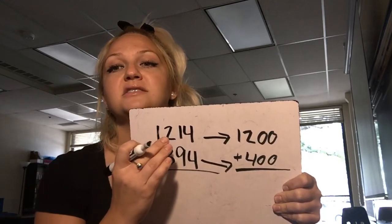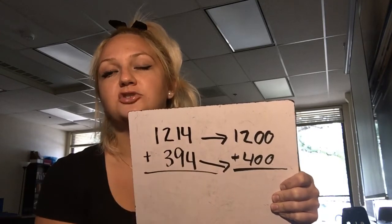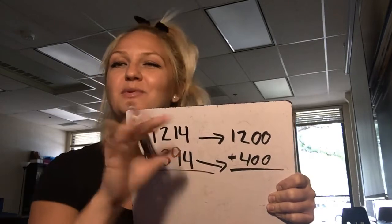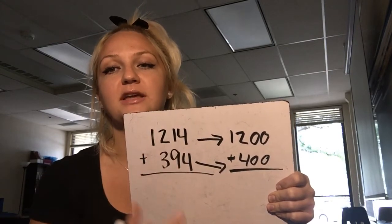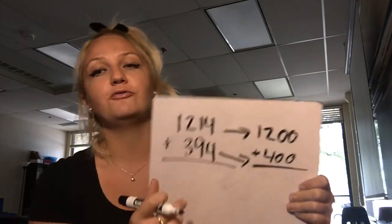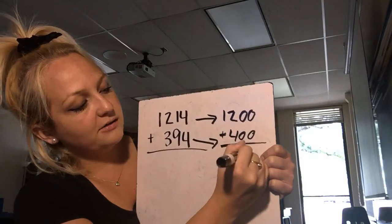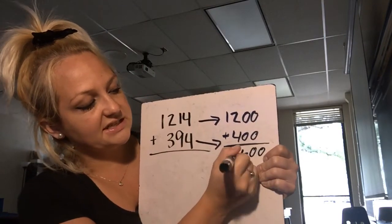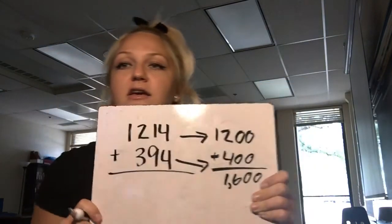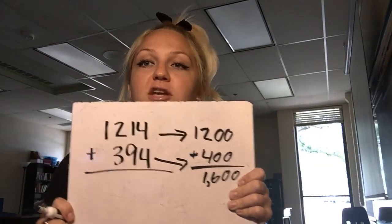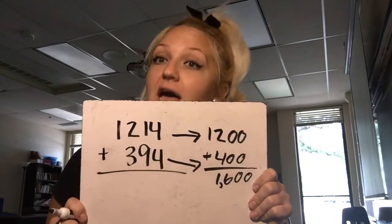So 1,214 plus 394 — I want to get my close answer. This is about 1,200 and this is about 400. So about 1,600 calories is how much I ate for lunch and my dessert. I wish!